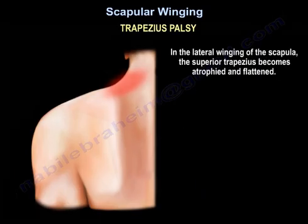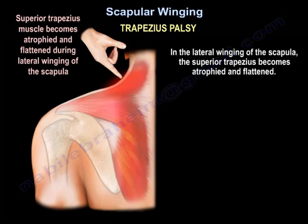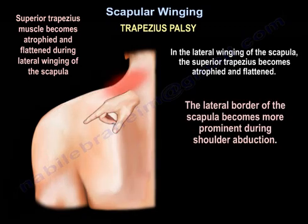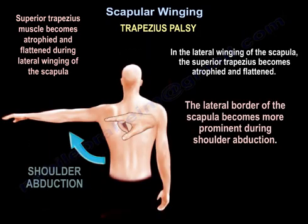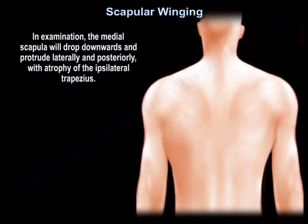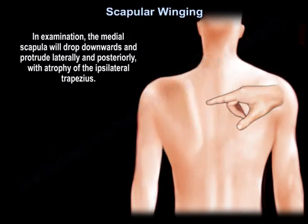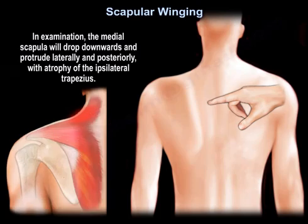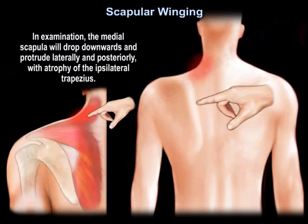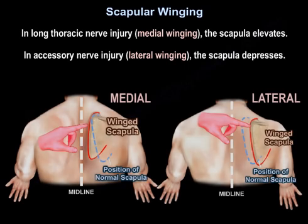In lateral winging of the scapula, the superior trapezius becomes atrophied and flattened, and the lateral border of the scapula becomes more prominent during shoulder abduction. On examination, the medial scapula will drop downwards and protrude laterally and posteriorly, with atrophy of the ipsilateral trapezius. In long thoracic nerve injury, the scapula elevates. In accessory nerve injury, the scapula depresses.